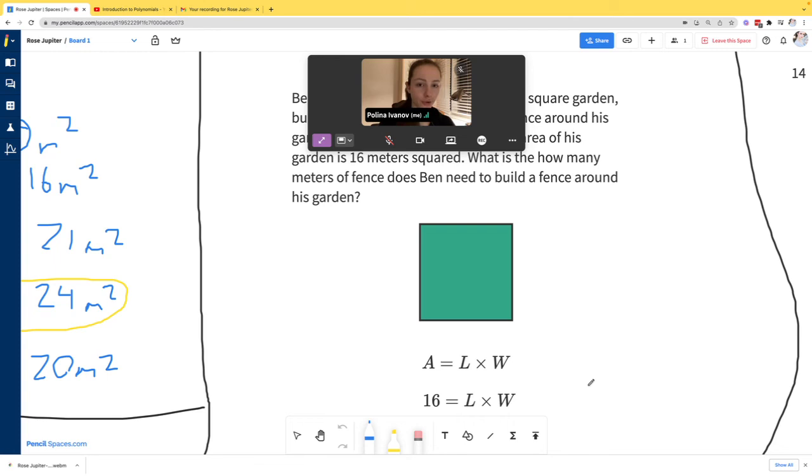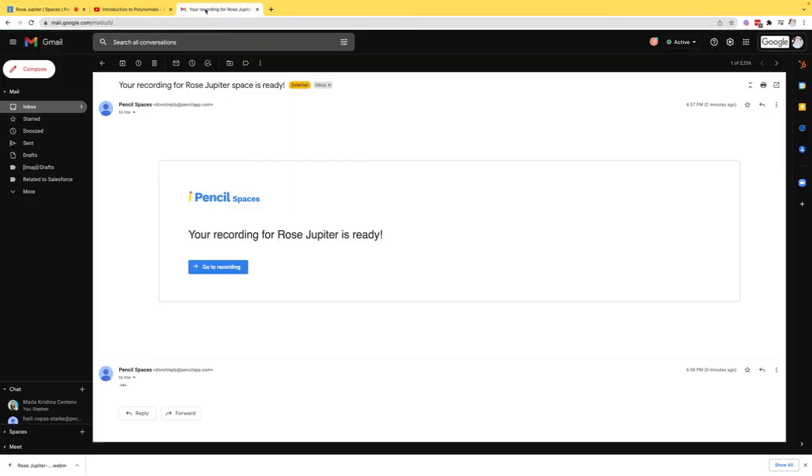If you chose to save your recording to the cloud, you'll immediately receive an email letting you know that your recording is ready. In this case, I can see that my recording for the space name is ready. Then you can click go to recording to view the recording in Pencil files.